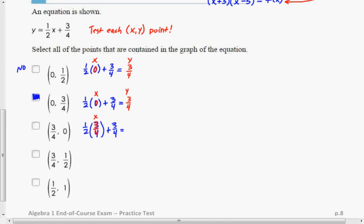I'm just going to go with that. So that one is a no. When I put 3 fourths in for x, I do not get 0 for y. When I put 3 fourths in for x, I also don't get 1 half.